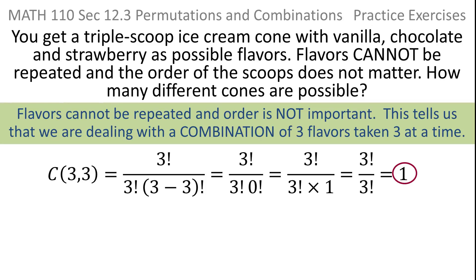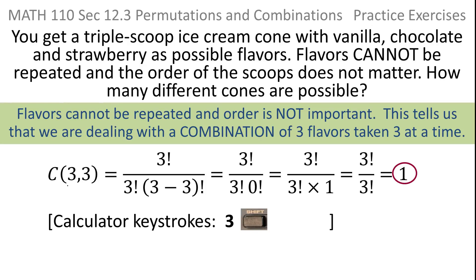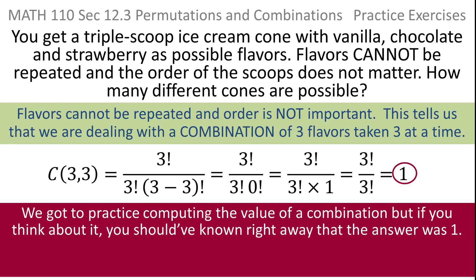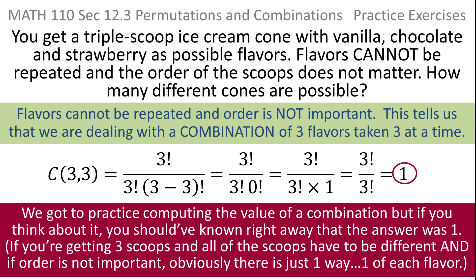If you want to do that in the calculator — and you really want to practice these calculator keystrokes because your calculator may be your best friend on this type of problem — put in 3, then press shift 2, then put in r which is 3, and press equal. You'll see that you get a 1. Honestly, if you think about it before you even start, you should have known the answer was going to be 1. If you've got three flavors, you can't repeat them, and you're not worried about order, there's only one way to do that — you just put them all on there.